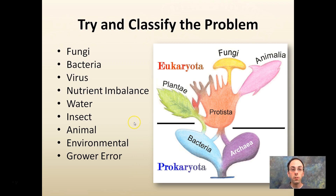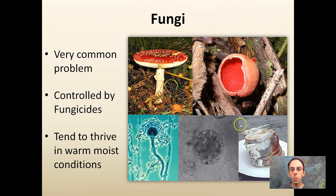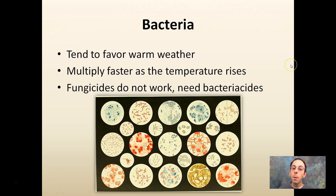With fungi, it's a very common problem controlled by fungicides — fungicides control fungi. They tend to thrive in warm, moist environmental conditions. Powdery mildew is a good example of a fungus you may see very commonly. Those warm, moist conditions — heavy rains, heavy dews, warm temperatures — cause these to really get going.